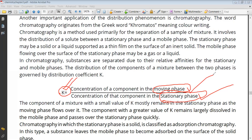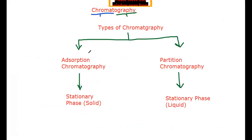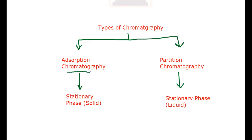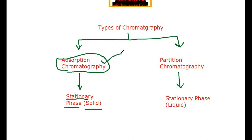We have chromatography divided into different types. There are two main types based on the nature of the stationary phase: adsorption chromatography and partition chromatography. If your stationary phase is solid, then you have adsorption chromatography.